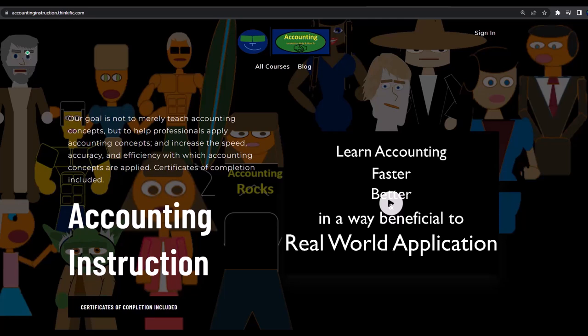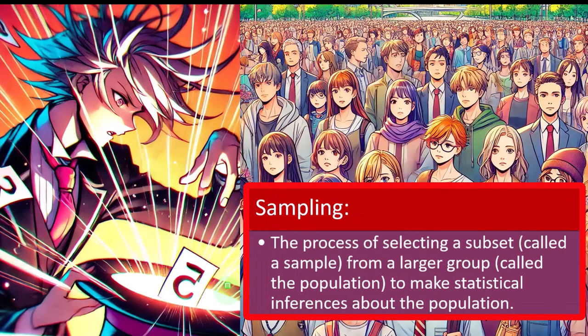If you'd like a commercial-free experience, consider subscribing at accountinginstruction.com or accountinginstruction.thinkific.com. Now, the core concept we need to understand and apply in order to do statistics properly: what is sampling? Sampling is the process of selecting a subset — called a sample — from a larger group called the population, to make statistical inferences about the population.